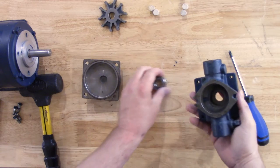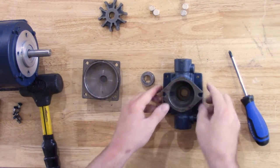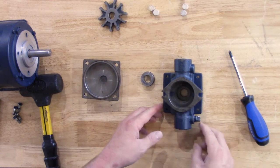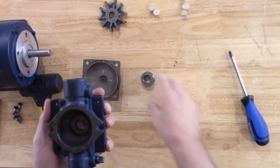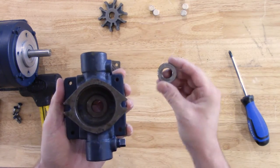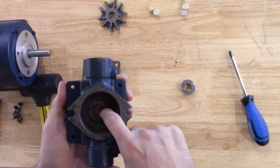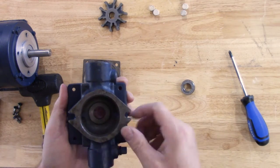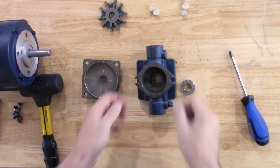Now that we have our seal out, this is where we can make sure that we clean the inside of this pump cavity so that when we go back together with our new seal, it will be easy to push that in. Once we have this cleaned, we can set this down.